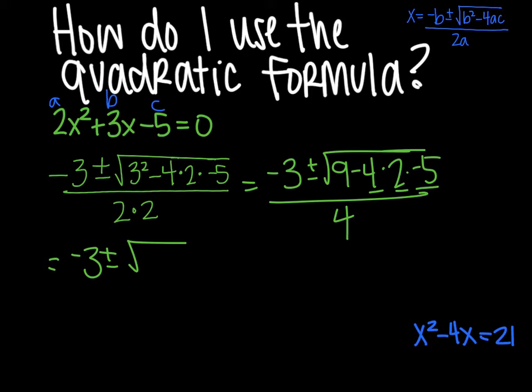8 times negative 5 is negative 40. So 9 minus negative 40, and that becomes a big plus.